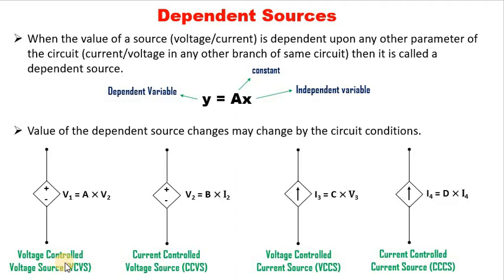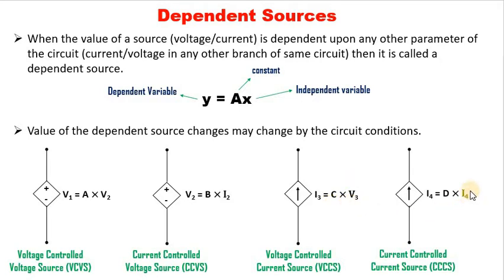There are four types of dependent sources. The first is the voltage controlled voltage source (VCVS) — a voltage is controlling a voltage source. The second is a current controlled voltage source (CCVS) — a current is controlling a voltage source. The third is a voltage controlled current source (VCCS) — a voltage is controlling a current source. The fourth is a current controlled current source (CCCS) — a current in another branch controls the value of a current source.